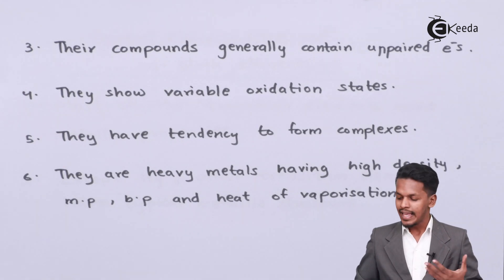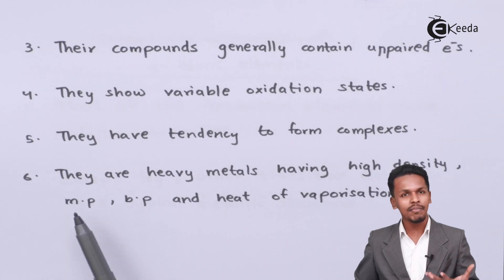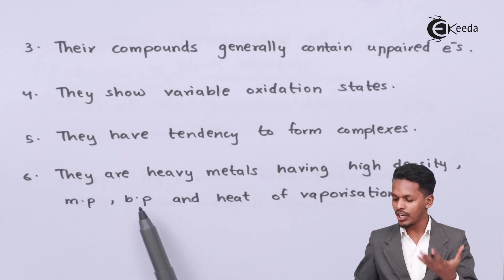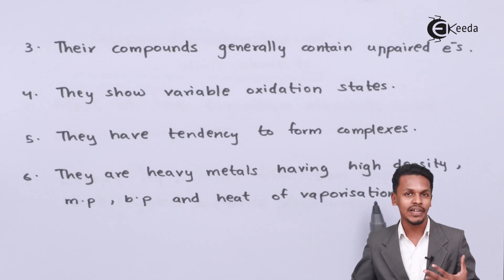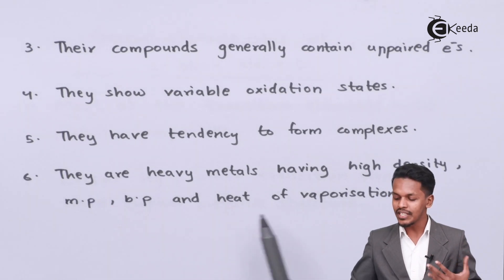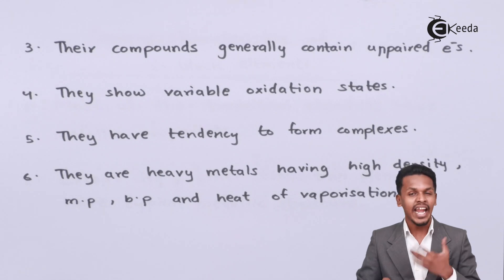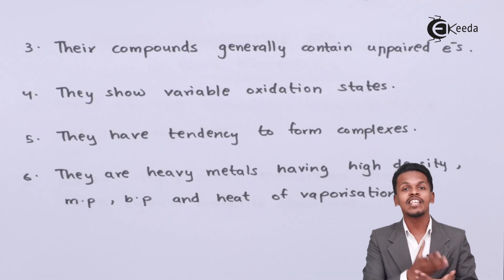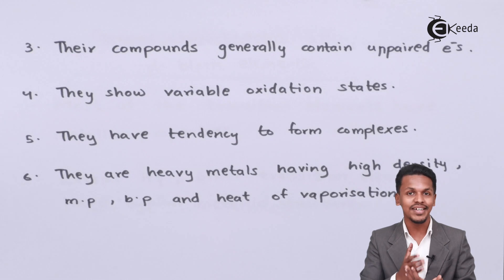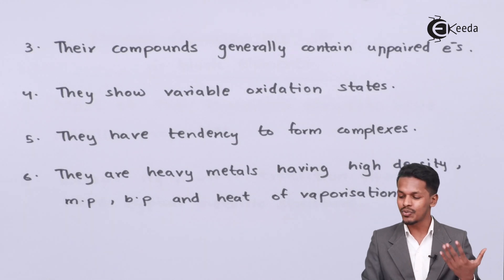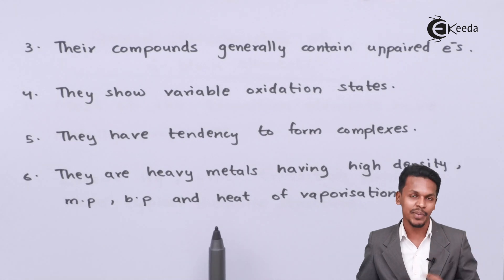They are heavy metals with high density, very high melting point, high boiling point, and higher heat of vaporization. Because of these qualities they are very hard metals. This is why S-block elements can be cut with a knife, but D-block elements cannot — they are very heavy and hard metals.